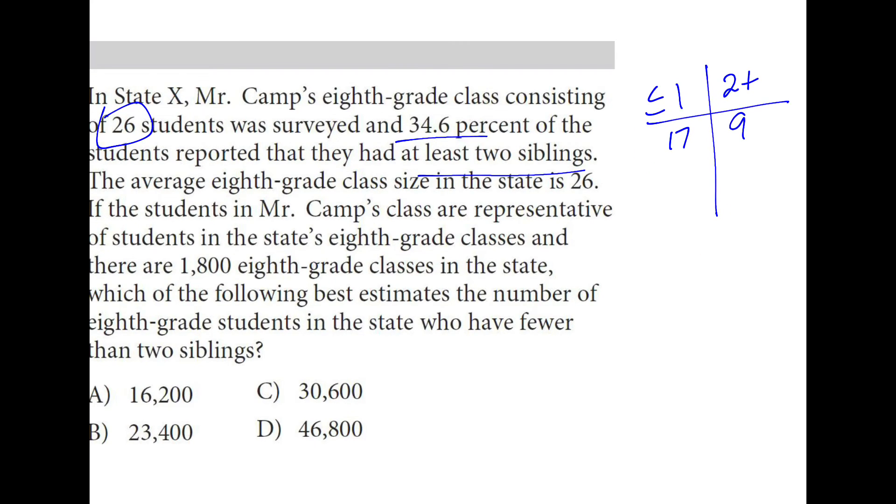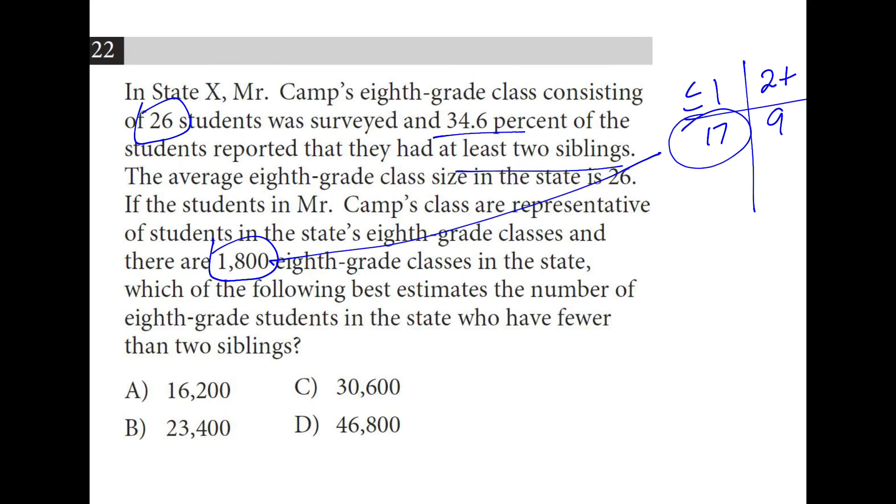So if the average class size is 26 and there's 1800 classes, I can take this number here and multiply it by 1800, and I get 3600. Because they want to know the number of 8th grade students in the entire state who have fewer than two siblings.